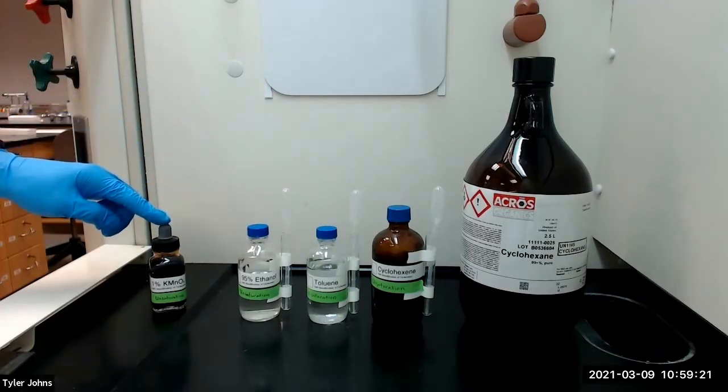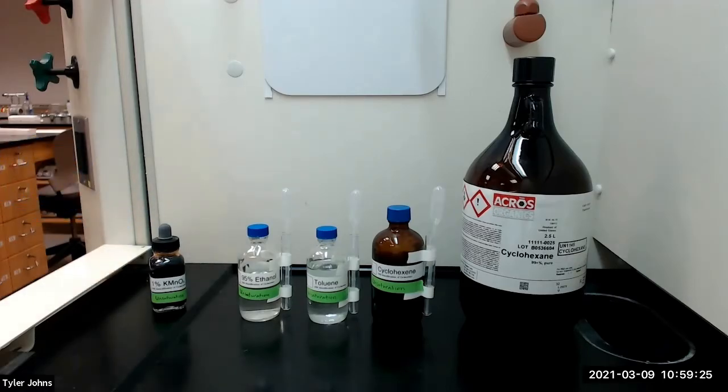We will then slowly add 1% aqueous potassium permanganate solution drop-wise. In a positive test for unsaturation, the purple color of the potassium permanganate reagent is discharged, and a brown precipitate of manganese dioxide forms.